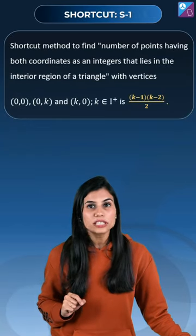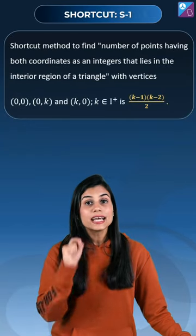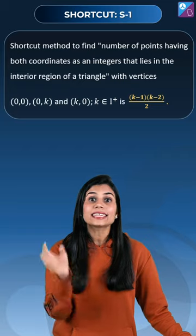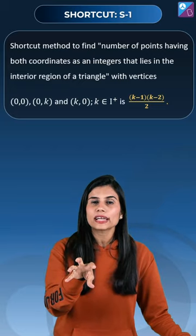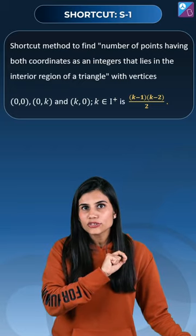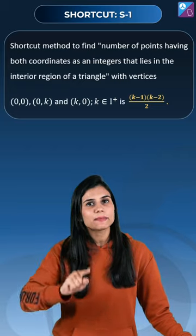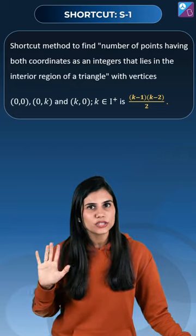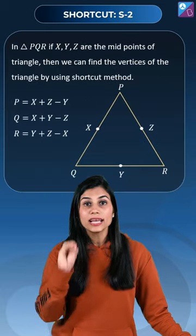Number four — very important, very useful: the number of points inside a triangle whose both coordinates are integers is given by (k-1)(k-2)/2.